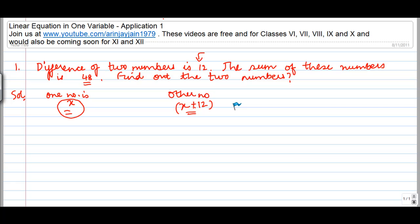And what I also know is that the sum of these two numbers, which means that sum of x plus this number x plus 12, is equal to 48. That is coming from here. Now it becomes easier for me to find out these two numbers because I have expressed this problem in the form of a linear equation.